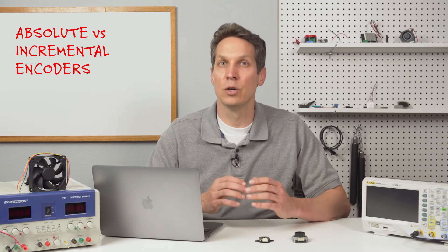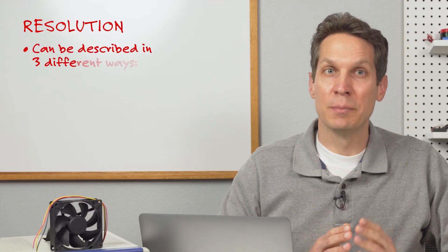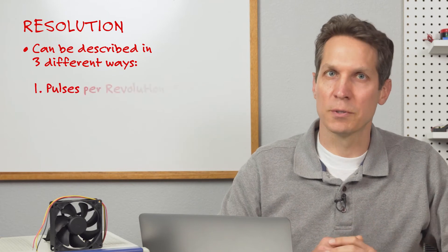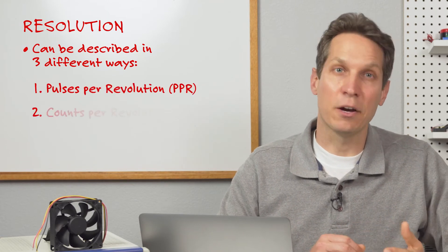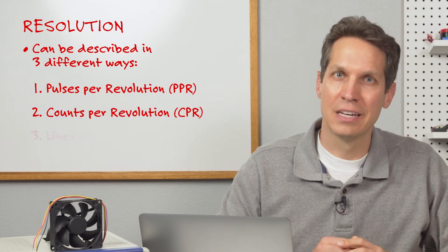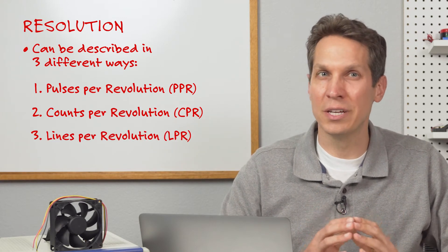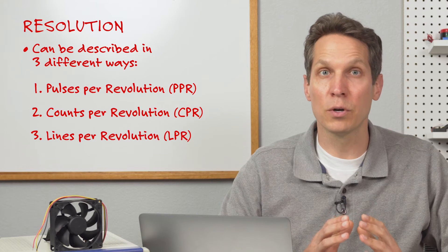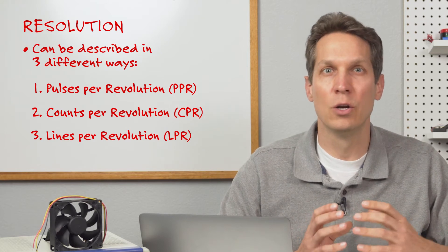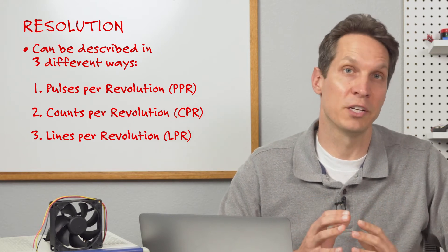it is necessary to know the encoder's resolution. Resolution can be described in three different ways: pulses per revolution or PPR, counts per revolution or CPR, and lines per revolution or LPR. As resolution is notated differently across the industry, it's important to get the numbers into the same format when comparing products from different encoder manufacturers.